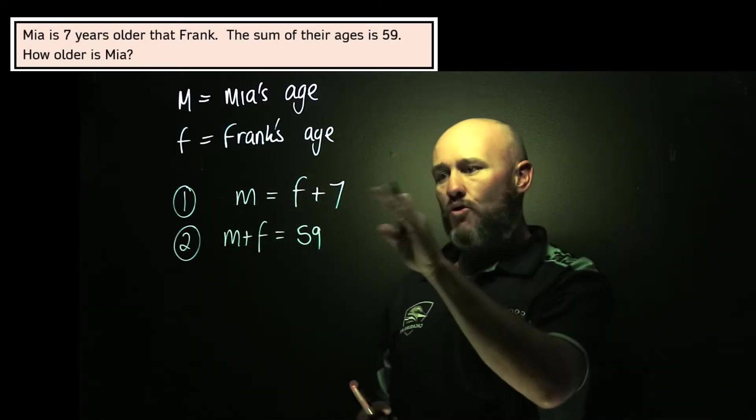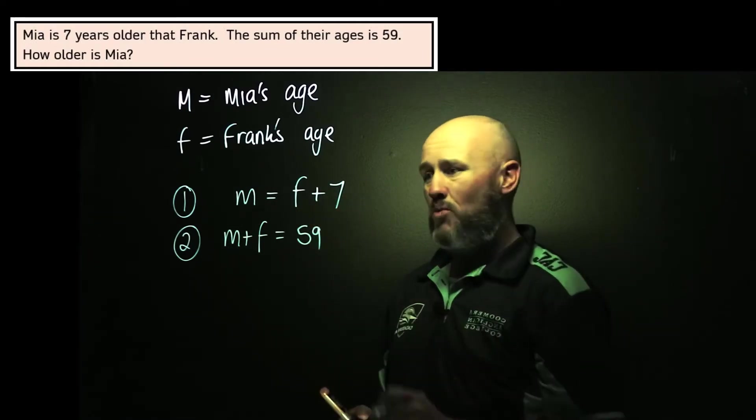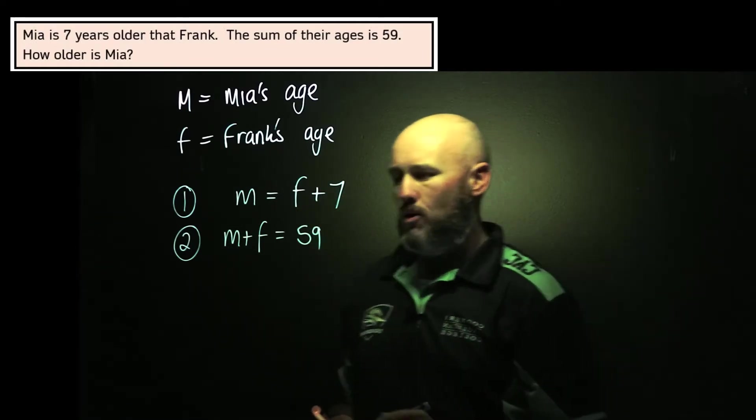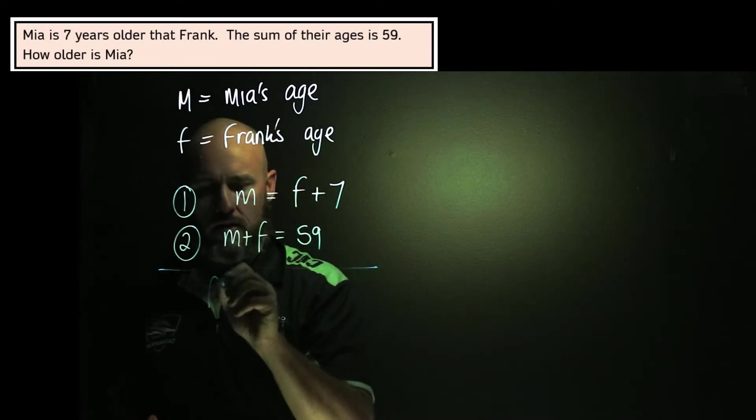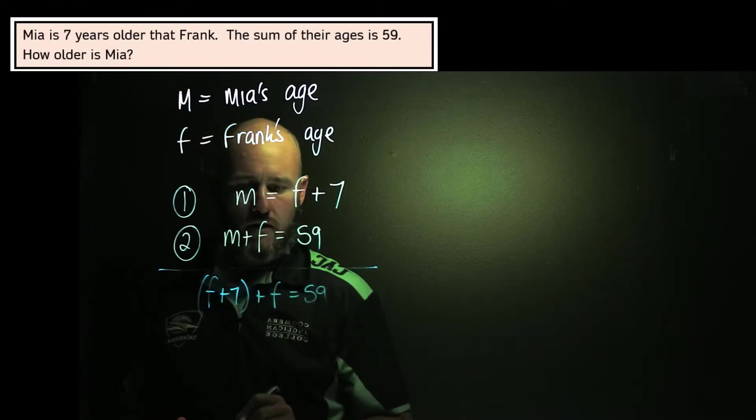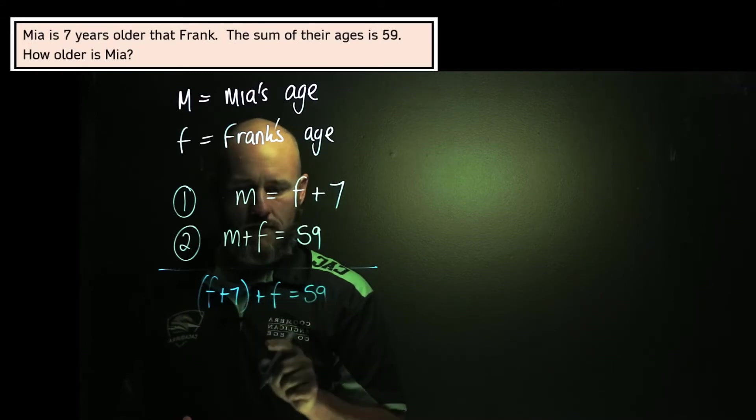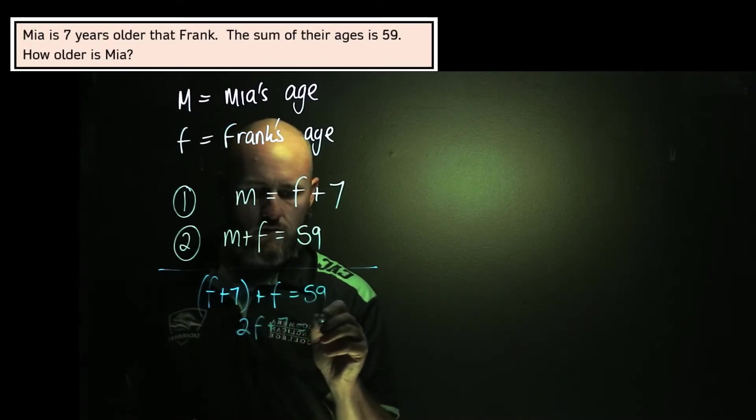And I can see that this is ripe for the picking on a substitution front. So that's what I'm going to use. I've already got Mia as the subject of the formula in equation one. So let's put that into equation two. In equation two, I now get F plus seven, that's what M is equal to, plus F equals 59. And F plus seven plus F is, of course, 2F plus seven equals 59.